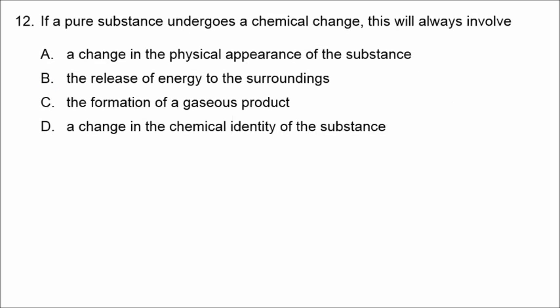In number twelve, by definition, if something undergoes a chemical change, it must involve the formation of a new substance — a change in the chemical identity of the substance. The correct answer is D.